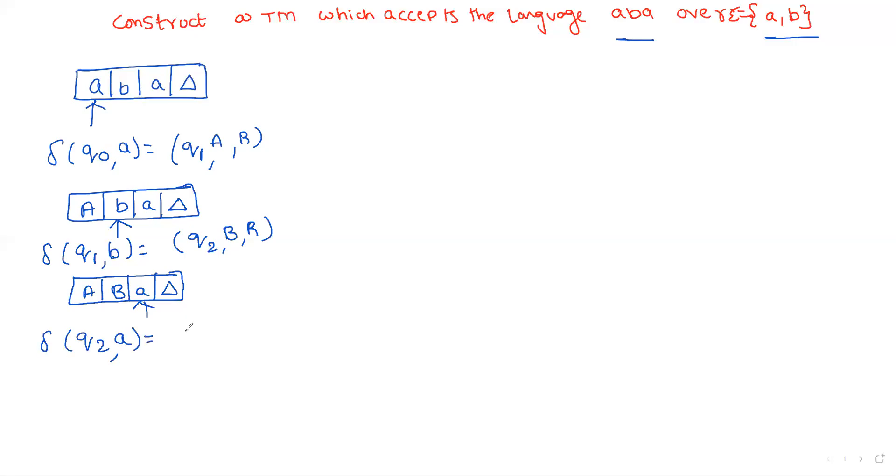On q2, if you are receiving an input symbol a, we are replacing this a with capital A. Move to state q3 with right direction. Now the head is at this position: A B A blank. The head is at this position.